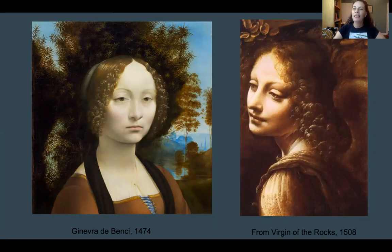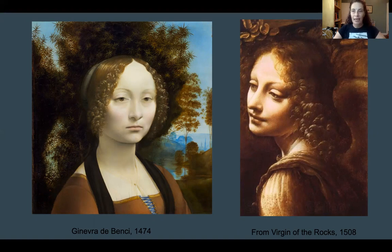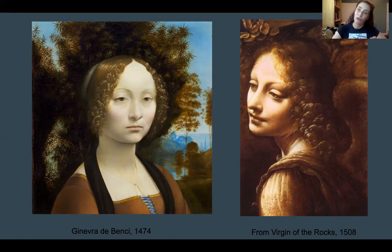I wanted to talk to you about Leonardo da Vinci's idea about shadows. He figured out that if you're doing a painting and you make the shadows really dark, it helps make the object look three-dimensional. Making objects look three-dimensional or having volume is really important in realistic art, because you're just painting on a canvas or doing a drawing on paper — it's flat. Our goal is to make it look three-dimensional.